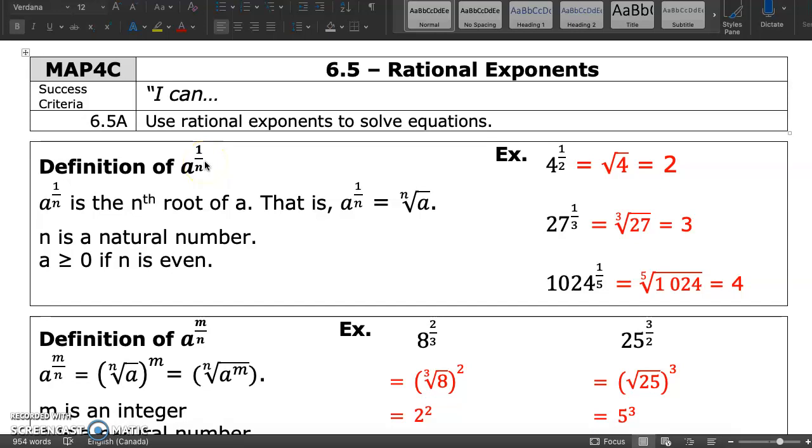So what we're going to look at is a to the 1 over n. This is the nth root of a. That is, a to the 1 over n is equal to the nth root of a. These are two different ways to express the exact same thing.